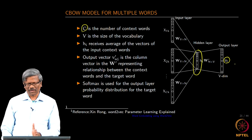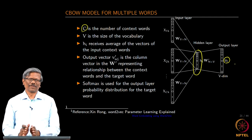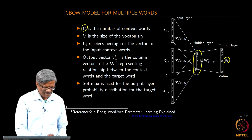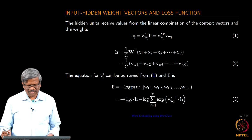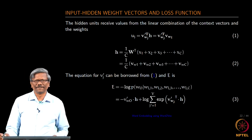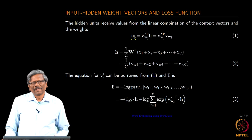If you use the CBO model for multiple context word it is very similar except for the input to the hidden layer computation. As I mentioned earlier. This is how we compute the vectors.